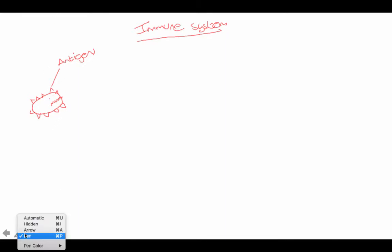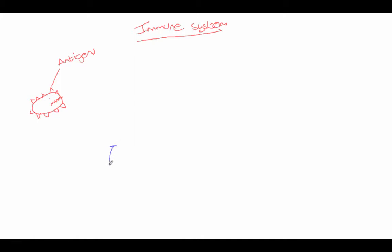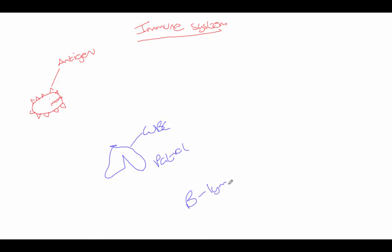Your immune system will recognize these antigens. You have things called white blood cells — WBCs — and they're usually a bit of a weird shape. They patrol around looking for things that are foreign. A special type of white blood cell you have in your body is called B lymphocytes.